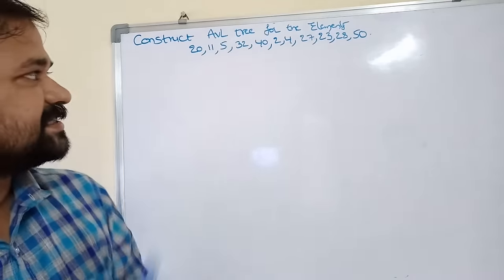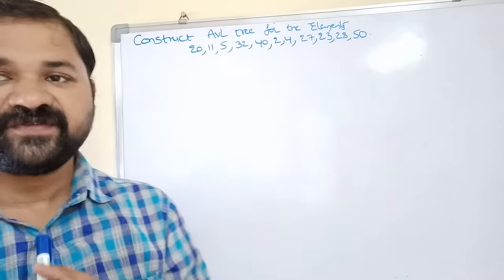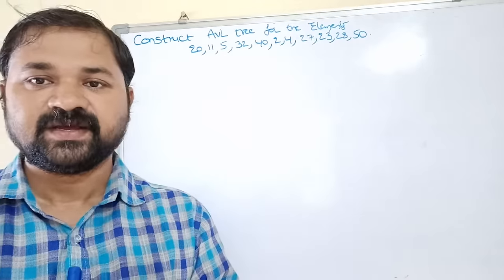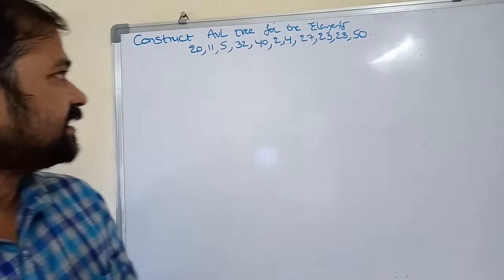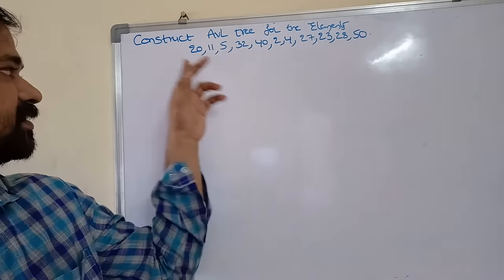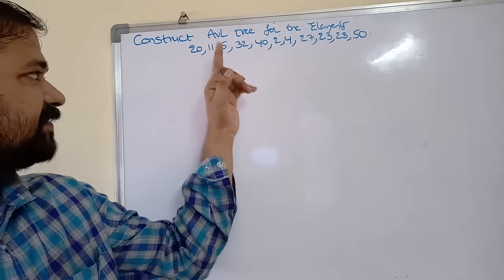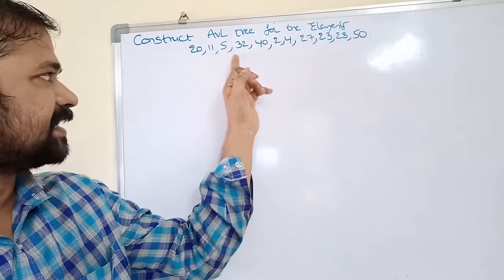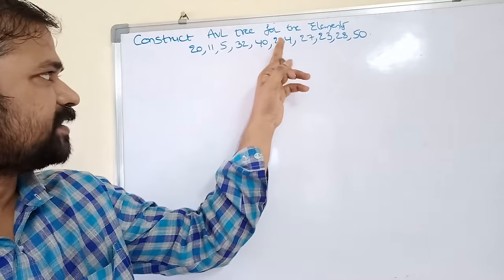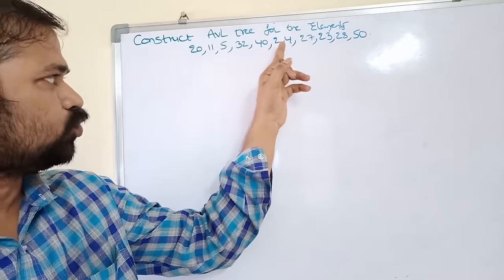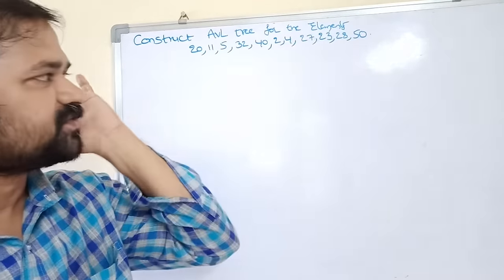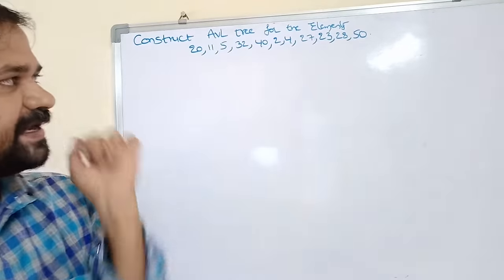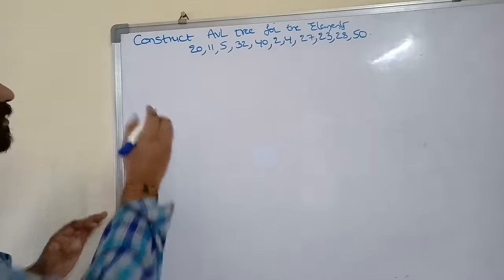Let us see this example in AVL tree. Construct AVL tree for the elements 20, 11, 5, 32, 40, 22, 4, 27, 23, 28 and 50.